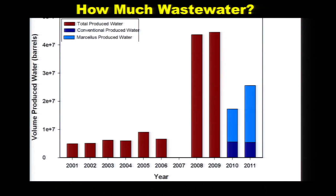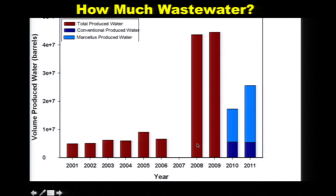How much wastewater? This is some analysis my group has done looking at produced water volumes in Pennsylvania from 2001 to 2011. About 8 to 10 million barrels of produced water were being produced every year in Pennsylvania for a really long time — we've been drilling holes in the ground for hydrocarbon extraction in Pennsylvania for more than 100 years. In 2008, with a sharp increase in Marcellus shale drilling, we saw a significant increase in produced water loads coming out in 2008 and 2009, followed by a drop in 2010 and 2011 with a significant increase in recycling within the Marcellus shale formation.